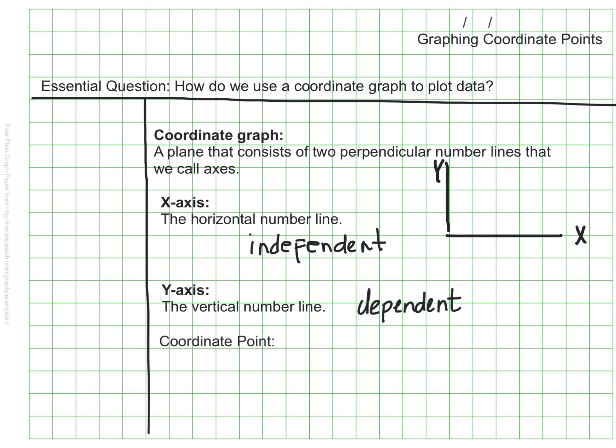We plot our points using a coordinate point, also sometimes called a coordinate pair. A coordinate pair or coordinate point is a pair of numbers that give the location of a point on a coordinate graph. It's written in a very specific way. It uses parentheses and a comma. It's also important to know that the x value always comes first and the y value comes second, just like x comes before y in the alphabet.